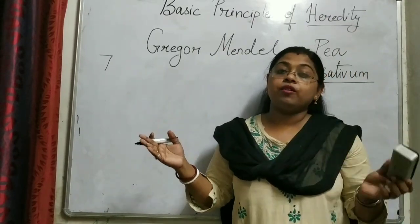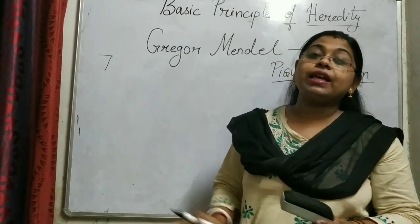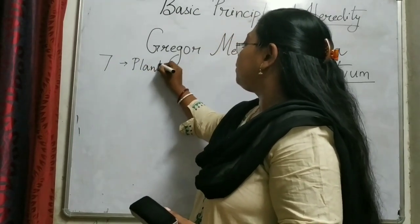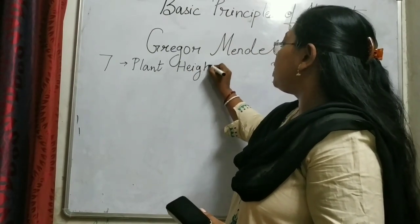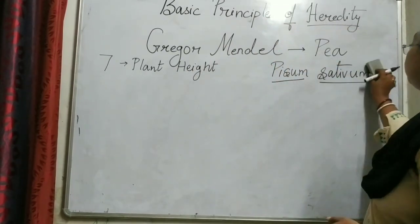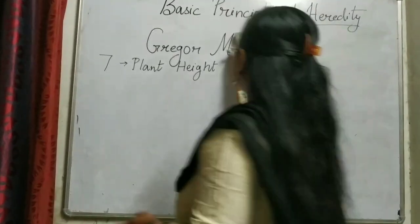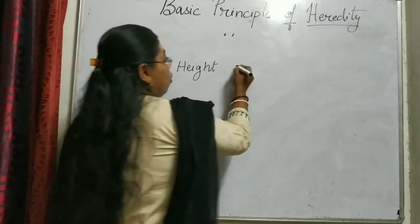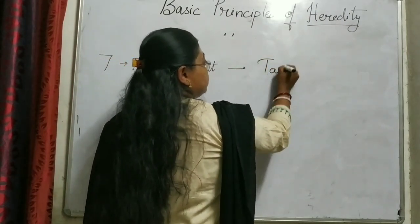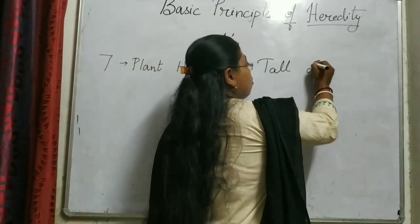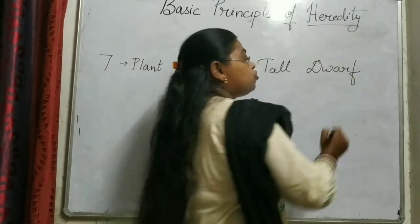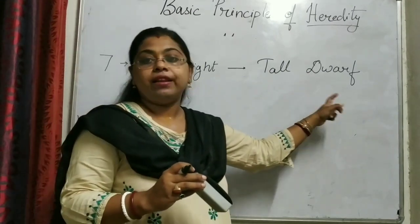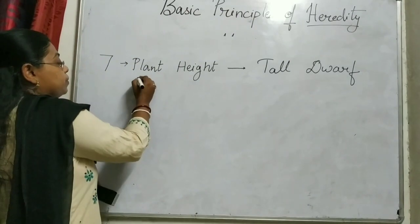If one is white, then another will be definitely black. So what are the 7 characters? The first character is plant height. He found that this plant is of 2 varieties — one is tall and another variety is dwarf. Dwarf means which has a very low height. So plant height is of 2 types: tall and dwarf.